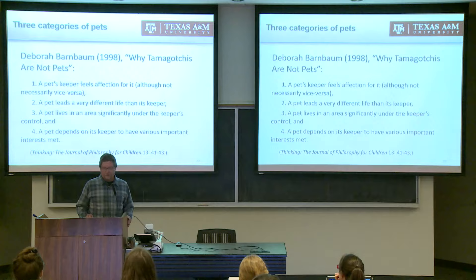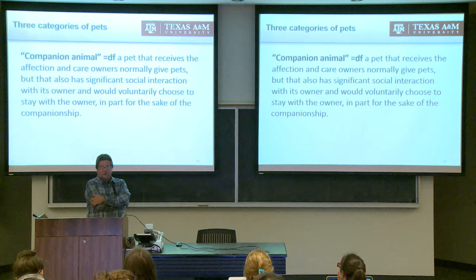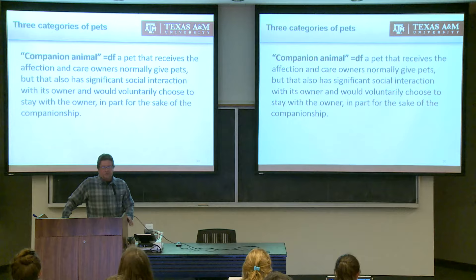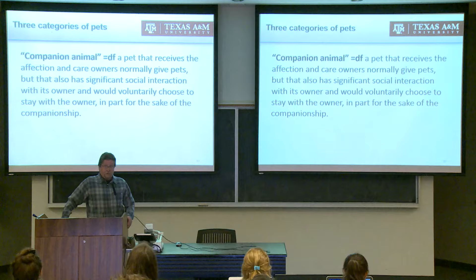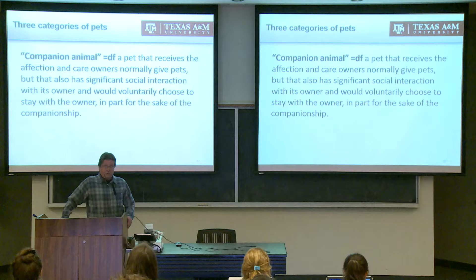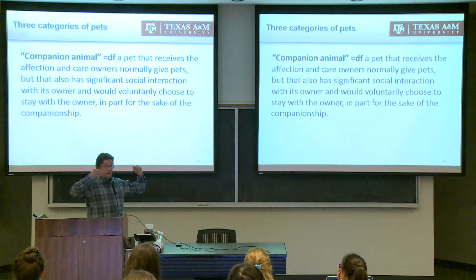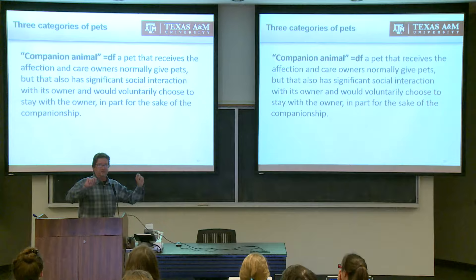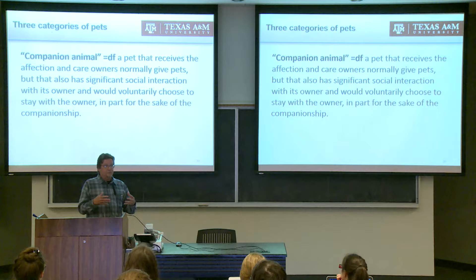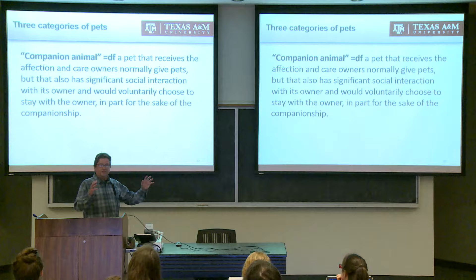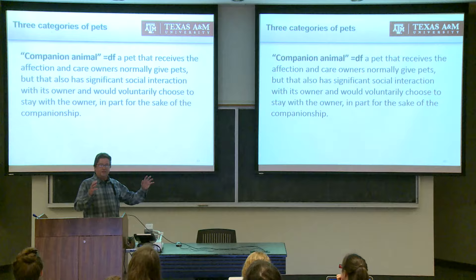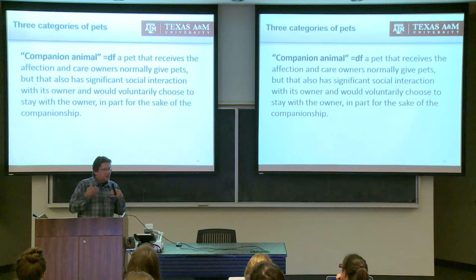Given that general conception of a pet, I want to distinguish three categories. A companion animal is a pet, by Barnbaum's criteria, that receives affection and care from the owner, has significant social interaction with the owner, and would voluntarily choose to stay with the owner in part for the sake of that companionship. There's an accordion term in there — 'voluntarily choose to stay' — since we can imagine dysfunctional relationships, but for our purposes a pet that wants to stay because it enjoys the companionship would safely qualify.